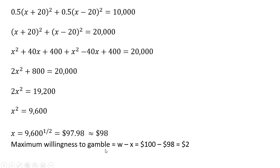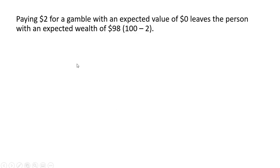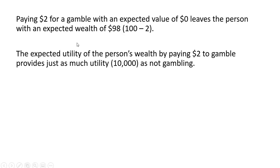So the maximum willingness to pay to gamble is $100 minus x, which we solved as $98, giving a willingness to pay of $2. This risk seeker is willing to pay $2 for a gamble that has an expected payout of $0. Paying $2 for a gamble with an expected value of $0 leaves the person with an expected wealth of $98, and that expected utility from paying $2 to gamble provides just as much utility as not gambling.